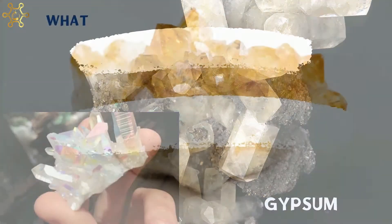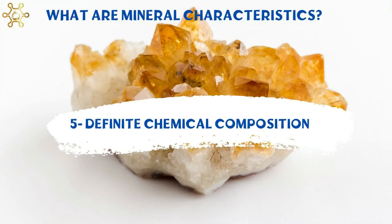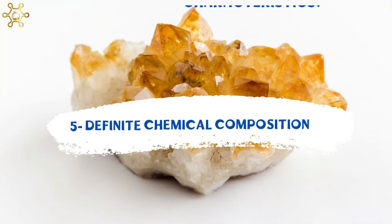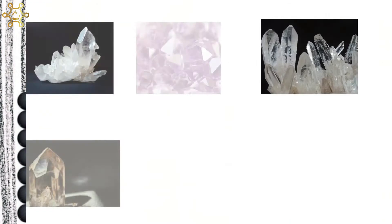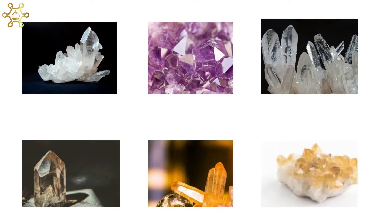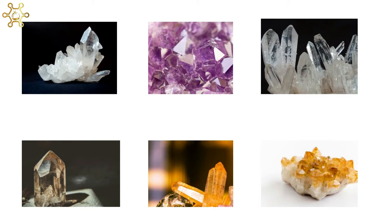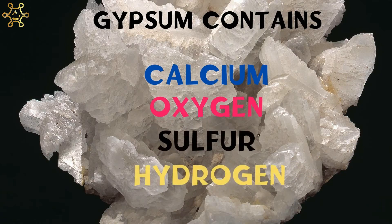Number 5: Definite chemical composition. A mineral has a definite chemical composition. Gypsum always contains calcium, oxygen, sulfur, and hydrogen in set proportions.